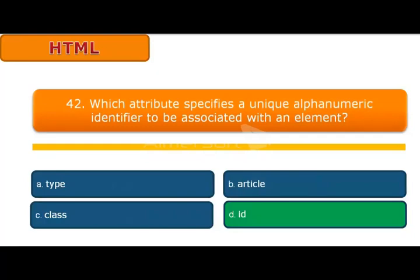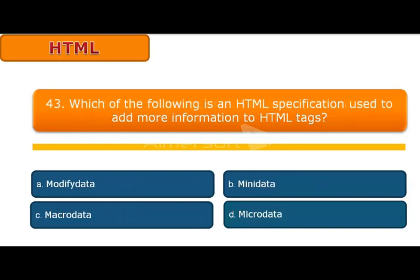Question number 42: Which of the following is the HTML specification used to add more information to HTML tags? Options include data, macro data, and micro data. Answer is micro data is an HTML specification used to add more information to HTML tags.